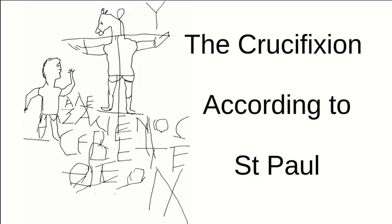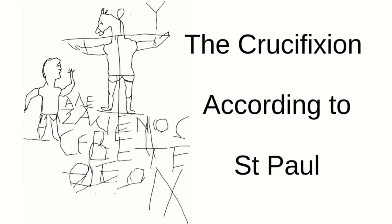The Christ myth theory, at least in its modern incarnation, starts with Paul's reticence about historical details of Jesus. But one thing Paul is not reticent about is that Jesus was crucified. So what may Paul have meant by that, and where did he get the idea from?